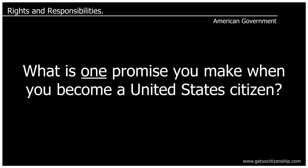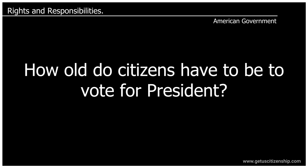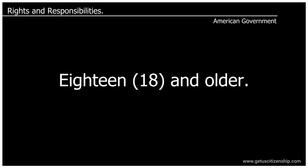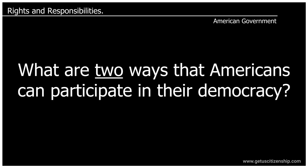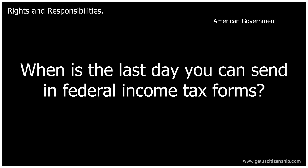What is one promise you make when you become a United States citizen? Be loyal to the United States. How old do citizens have to be to vote for president? 18 and older. What are two ways that Americans can participate in their democracy? Vote. Join a political party. When is the last day you can send in federal income tax forms? April 15.